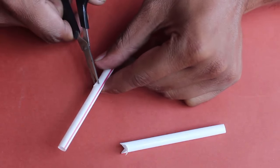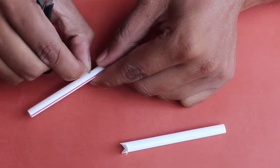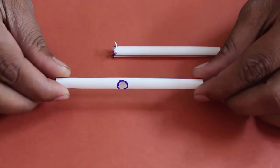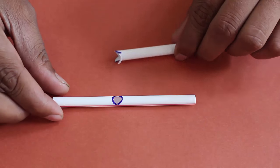Now make a small circular hole in the center of the other straw piece. Once you have both these pieces ready,